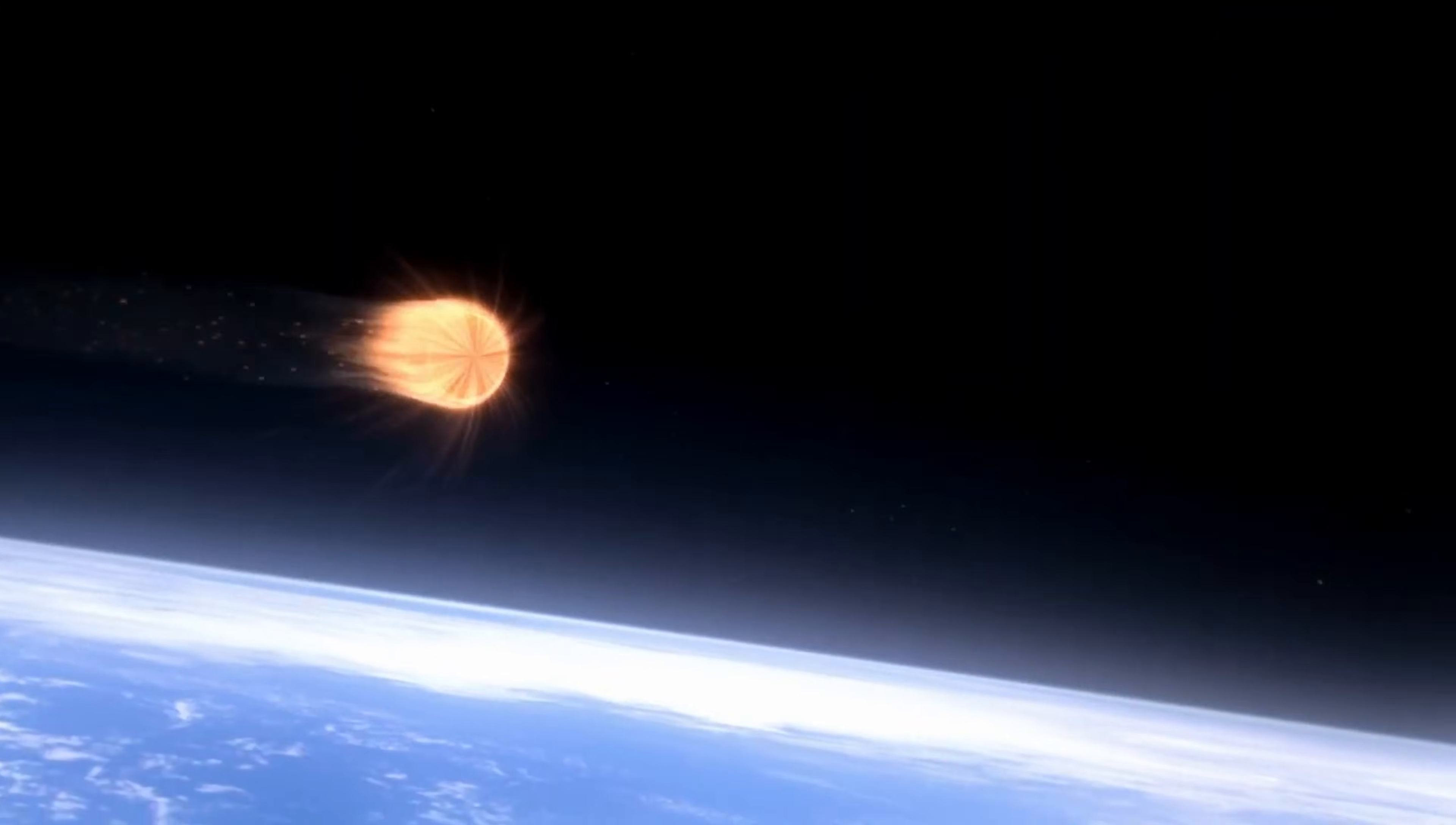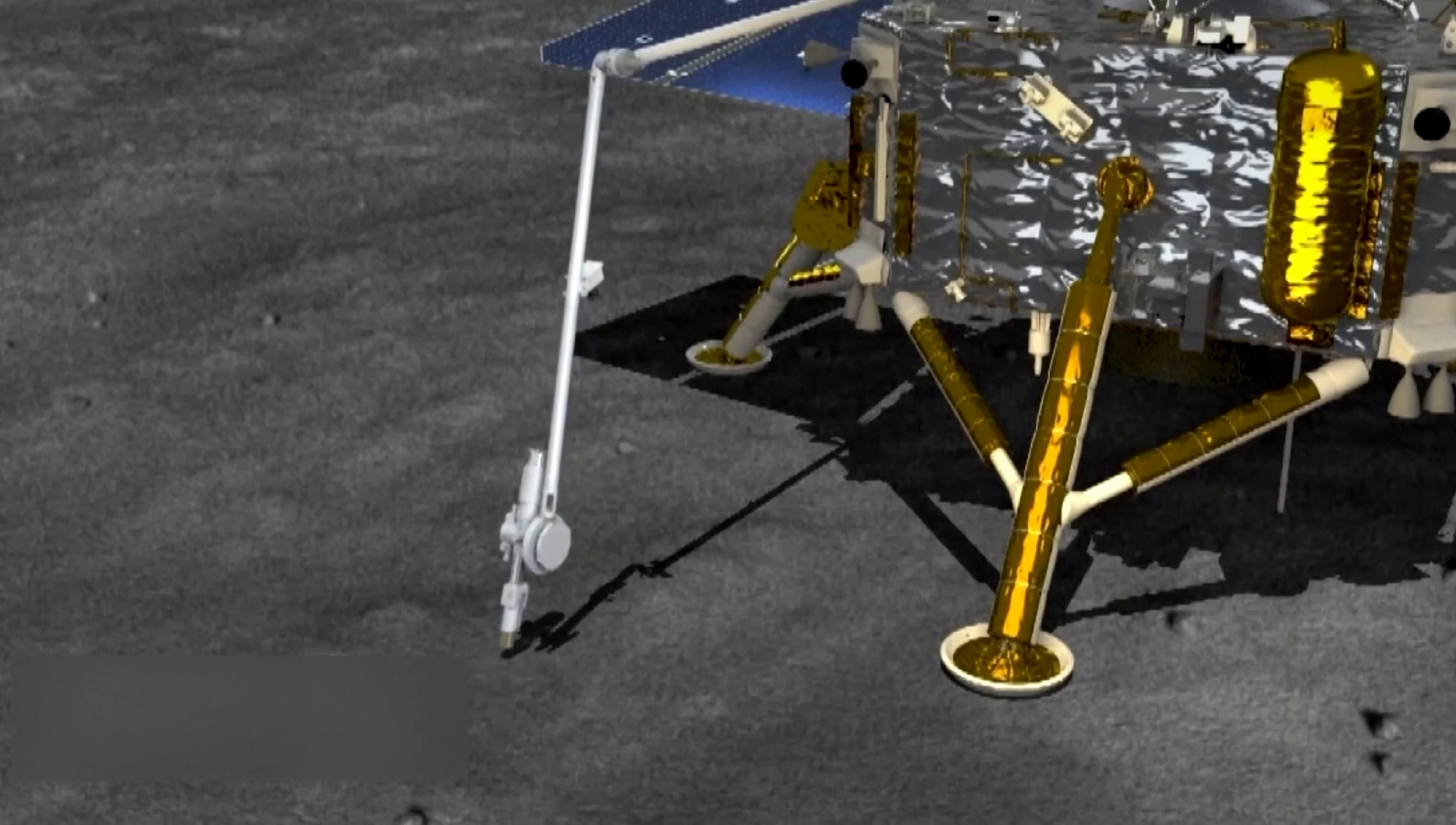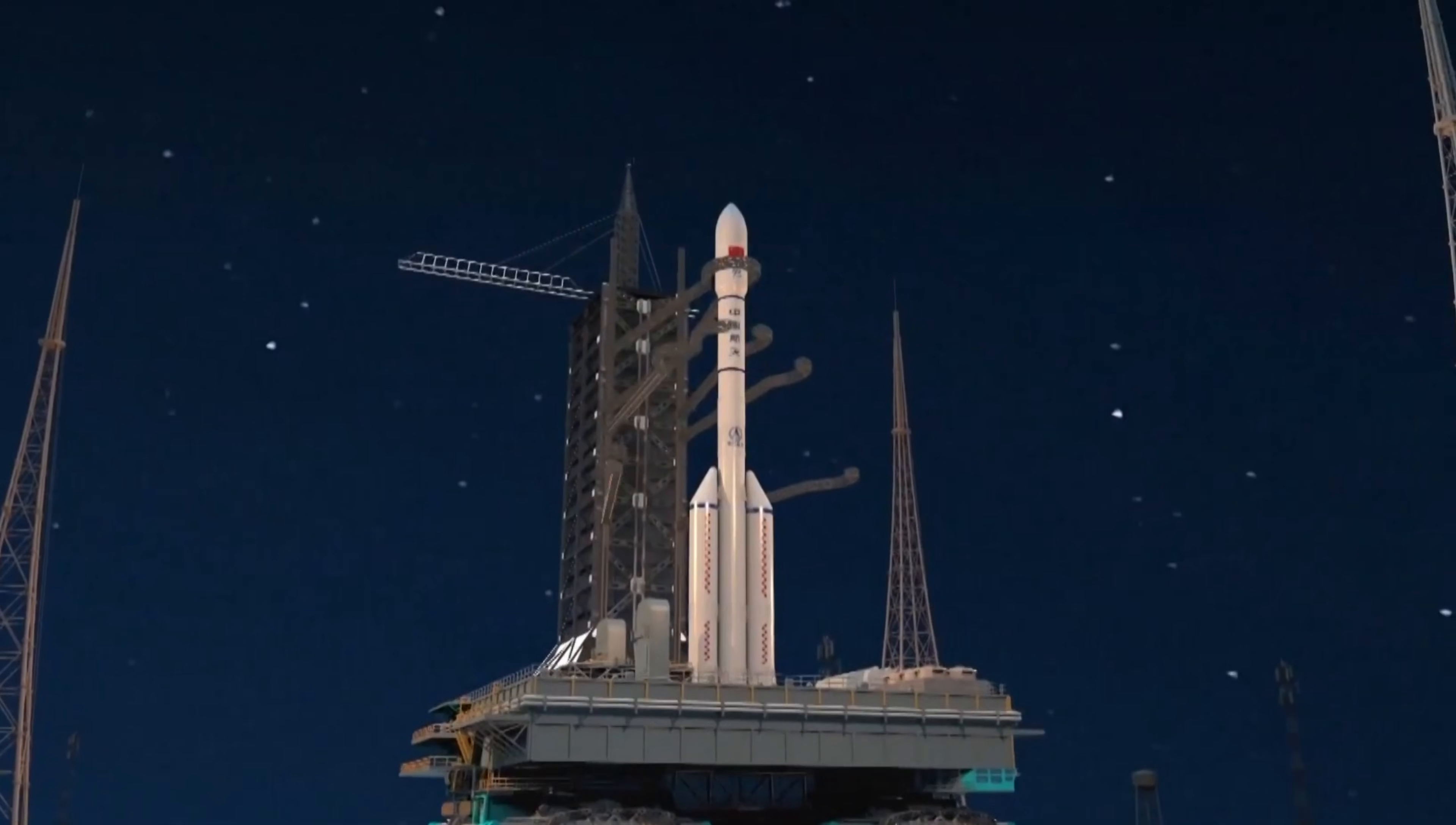Heat shields that withstand 5,000 degrees Fahrenheit. Composite materials lighter and stronger than anything flying on Western rockets. The Tiangong Space Station is operational and expanding right now. The Chang'e missions have landed on the far side of the moon. Multiple times. They've returned lunar samples. They're building the International Lunar Research Station. Not planning to build it. Building it. Then came the announcement that changed everything.